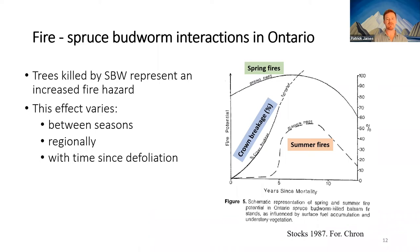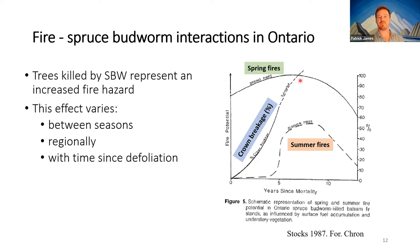Digging into the literature, I found work by Brian Stocks about how trees killed by spruce budworm represent an increased fire hazard, but this effect varies between seasons, regionally, and with time since defoliation. He created a conceptual model with years since mortality on the x-axis and fire potential on the y-axis — a spring fire curve and a summer fire curve — driven by the percent of crown breakage, which creates greater ladder fuel.